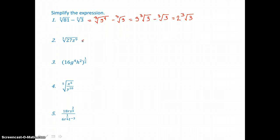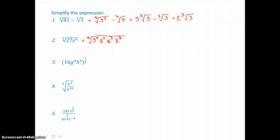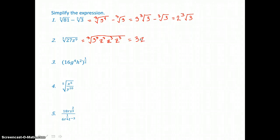Let's simplify in problem 2 here. We're taking the cube root of 27z to the ninth. For every 3 factors alike, 1 will come out. So I can write 27 as 3 cubed. I can write z to the ninth as z cubed times z cubed times z cubed — that's 9 factors of z. For every 3 factors alike, 1 will come out. So the cube root of 3 factors of 3 is 3. The cube root of 3 factors of z is z. And I'm going to do that 2 more times for a total of 3. So my final answer is 3z to the third power.